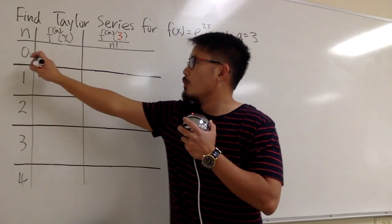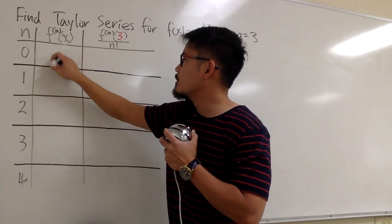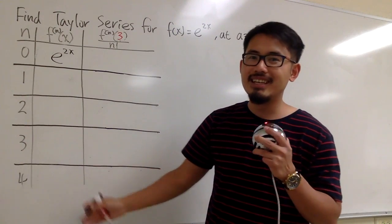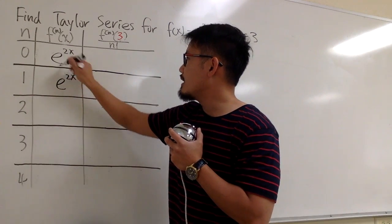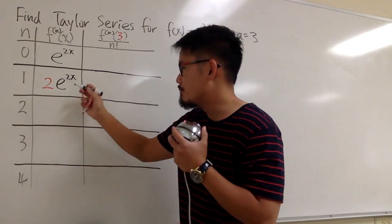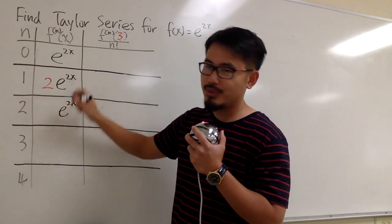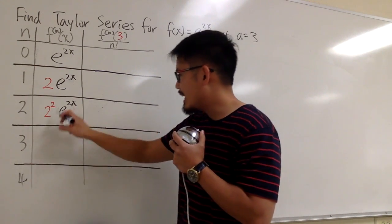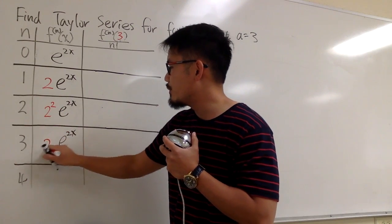When n is equal to 0, the 0th derivative is just the original function, so we have e to the 2x, and now we differentiate that 4 times. Hopefully you see a pattern. The first derivative of e to the 2x is e to the 2x multiplied by 2 because of the chain rule. The second derivative is e to the 2x times 2 times 2, which is 4, written as 2 to the 2nd power. The third derivative is e to the 2x times 2 to the 3rd power.